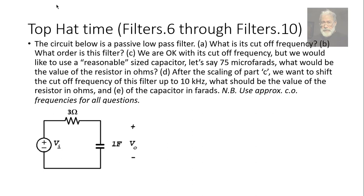we want now to shift the cutoff frequency from whatever we found to 10,000 Hz, 10 kHz. Observe. These are not 10 krad per second. These are 10 kHz. There is a factor of 2 pi there. What should be the value of the resistor now? And what should be the value of the capacitor in farads?